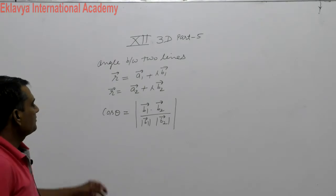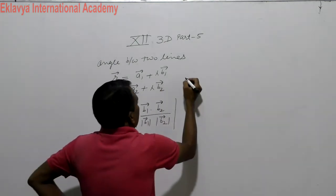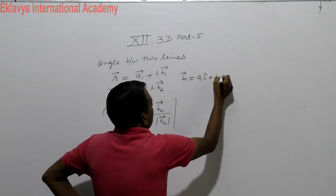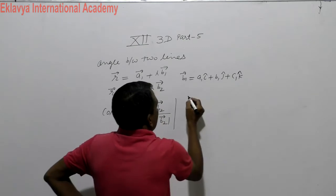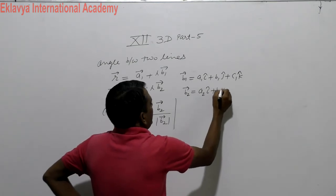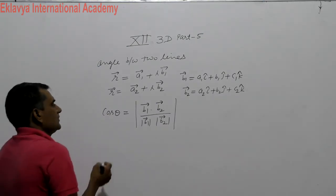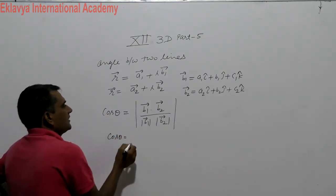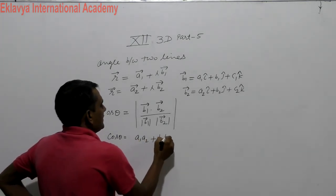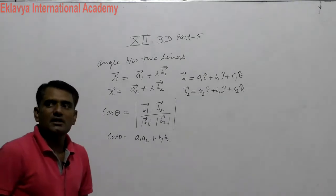By this formula we can calculate cos theta. Now, this B1 vector is A1 i-cap plus B1 j-cap plus C1 k-cap. Now cos theta equals B1 dot B2. We discussed the dot product of vectors: i-cap product with i-cap, j-cap product with j-cap, k-cap product with k-cap.